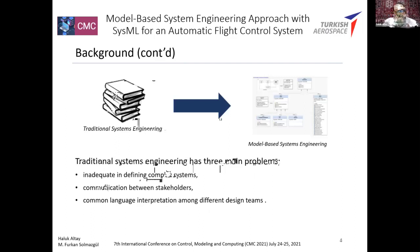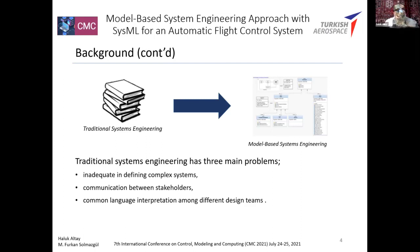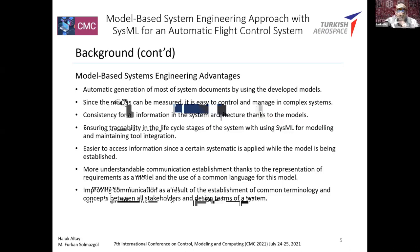Traditional systems engineering versus model-based systems engineering: traditional systems engineering has three main problems. First, it is inadequate in defining complex systems like a helicopter, aircraft, or vehicle. Second, communication between stakeholders. Third, common language interpretation among different design teams. Since systems engineering is an interdisciplinary specialty, there are some problems in communication. Model-based systems engineering was developed to find solutions to such problems.